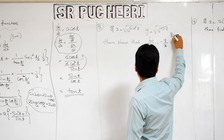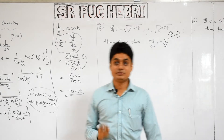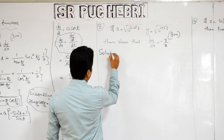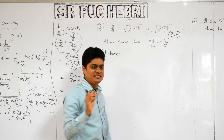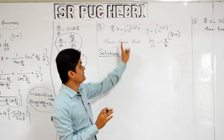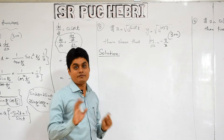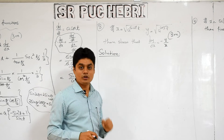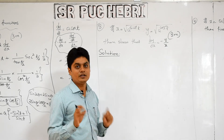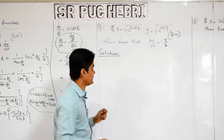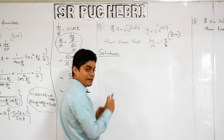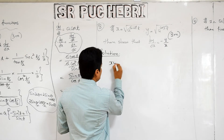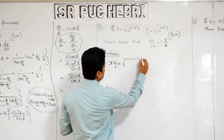Next question — this is also an important three-mark question asked in the final exam. There are two different methods to answer this. I will take one easy method. It is a parametric function, but we are not using parametric function differentiation. I have another technique to solve this problem very easily. X is known, y is known — just multiply them.